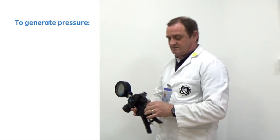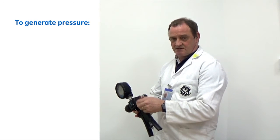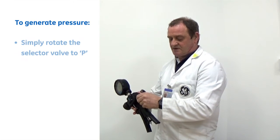To generate a pressure, we simply rotate the selector into the pressure position indicated by the P.